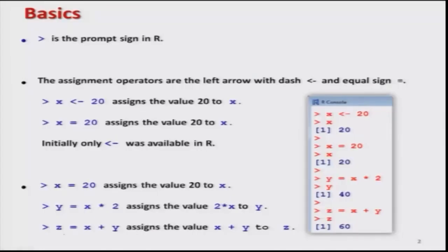The first thing to keep in mind is that as soon as we start R, there is a prompt sign, and the prompt sign in R is denoted by the greater-than sign. This will always be the first sign on the R GUI window — the R Graphic User Interface window. Now, whenever we want to do anything, I have to assign a value to a variable. For example, in mathematics we usually write X equal to 2.